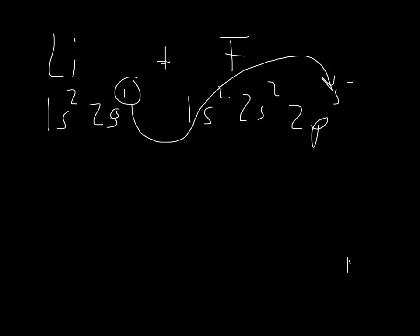Our lithium ion ends up 1s² and is isoelectronic with helium. And our fluorine, 1s² 2s² 2p⁶, is now isoelectronic with neon.